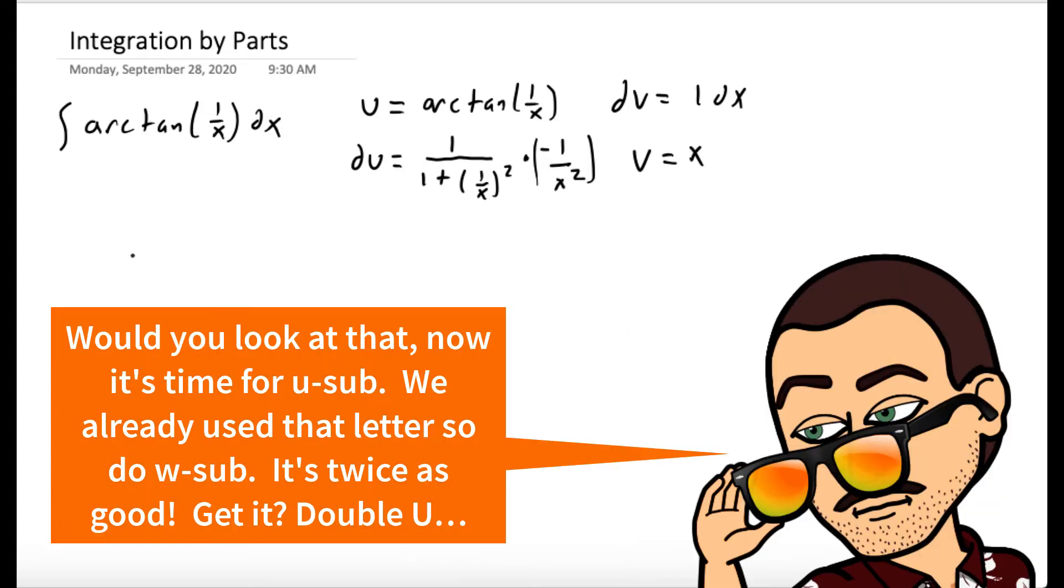Okay, so the integral of arc tan of 1 over x dx is equal to x arc tan of 1 over x. So that's uv minus the integral of v du. So minus the integral, the numerator is negative x. And the denominator, when you multiply that x squared through, you get x squared plus 1 dx.